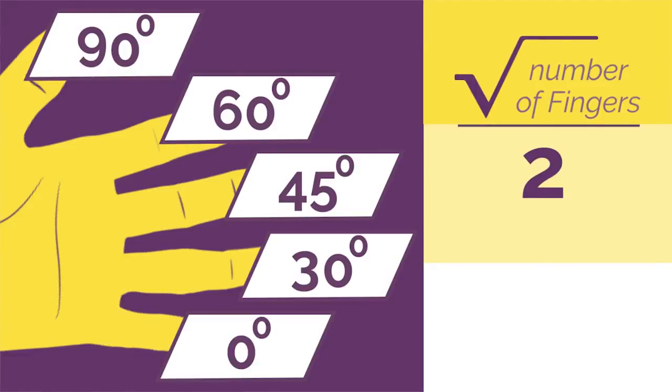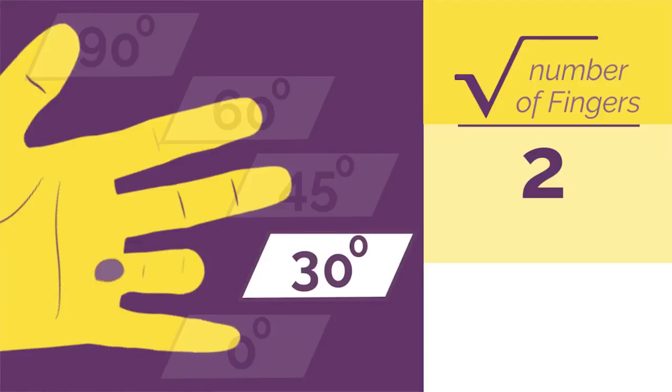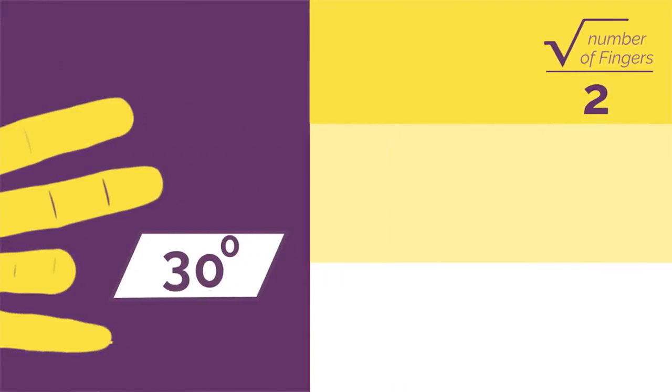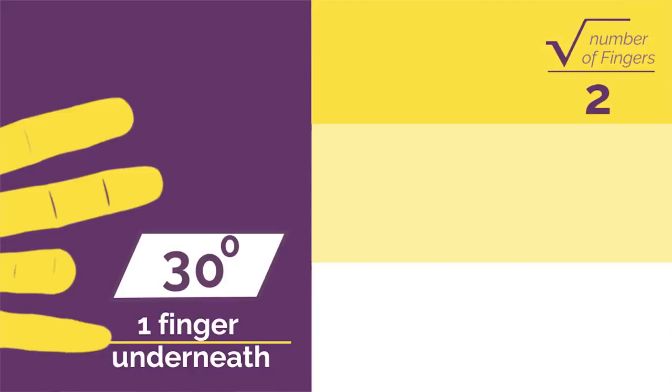So if we wanted sine 30, we'd bend down our 30 degree finger and you just have your baby finger underneath. So sine 30 is square root 1 divided by 2 because there's only one finger underneath, which simplifies to a half.